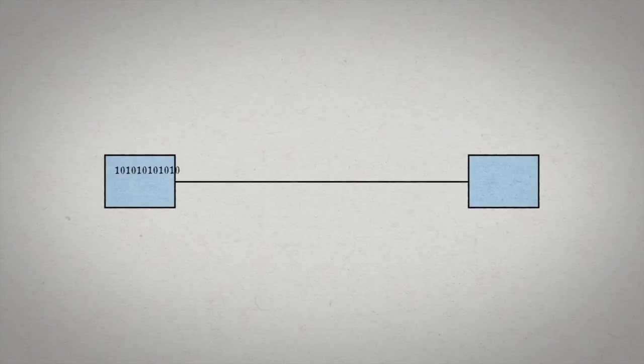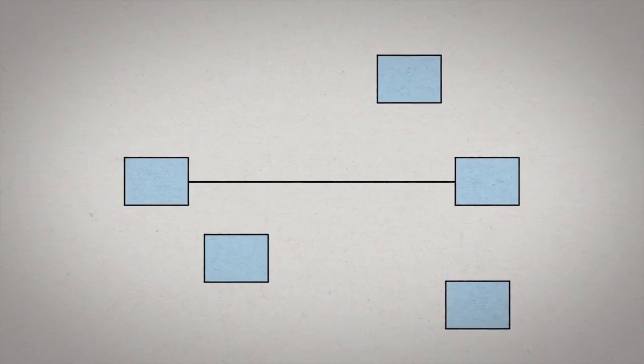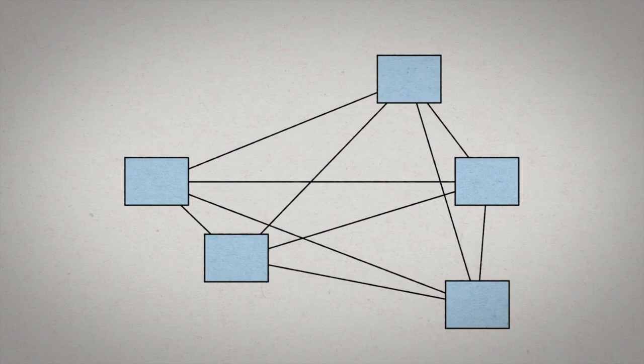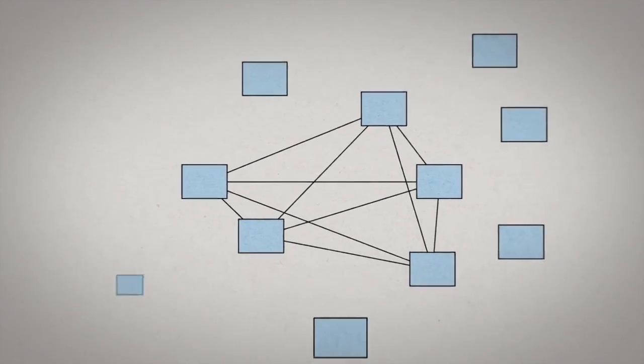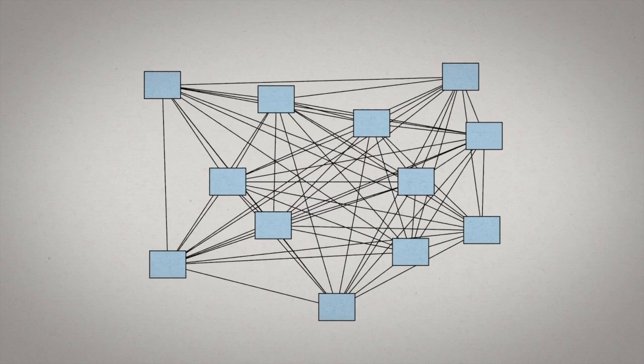Doing this with two computers along a single line is quite simple. But of course, other people wanted to connect their computers together too, leading to a computer network. One simple solution to make this network would be to connect all machines to all other machines. But as you add more and more computers, this requires an impractical amount of line.